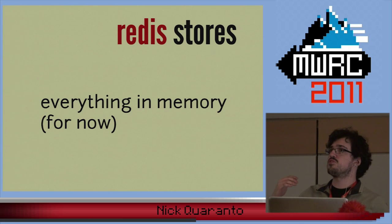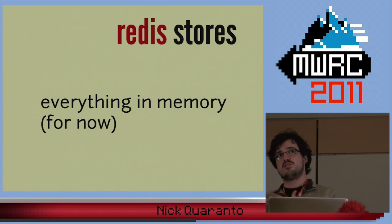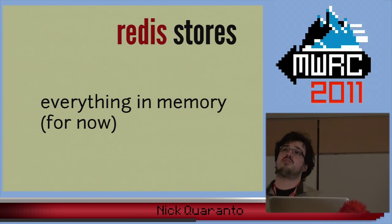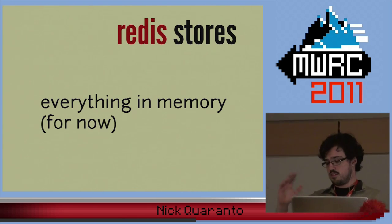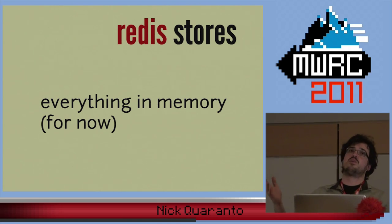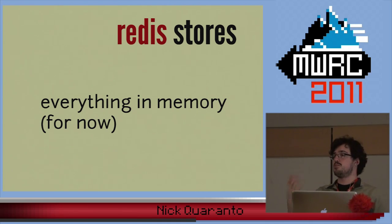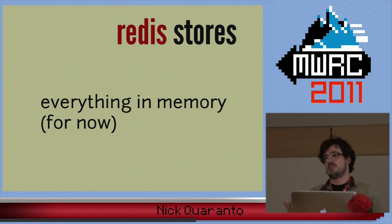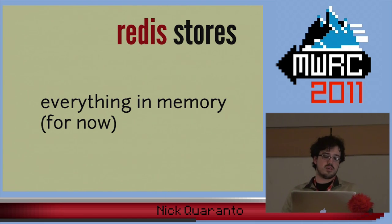Right now, Redis stores everything in memory, so it's used very much like a cache, like Memcache. If it goes down, you're mostly screwed. But you get more or less paranoid with Redis depending on how dependent your app is on it. You can basically save to disk every so often — it's not full ACID compliancy, but that's how it goes.